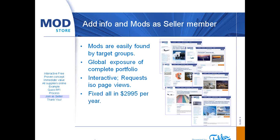And all for a fixed $3,000 per year — all in, irrespective of the number of ARVs or the number of modifications that you choose to put online. Compare that to a magazine advertising fee. You already have many visitors, many page views, and many ARVs are already moving through Modstore to the right people.